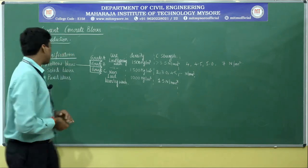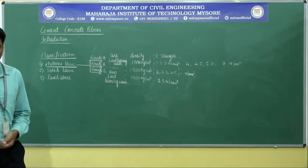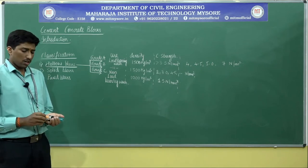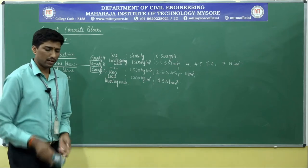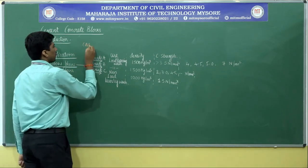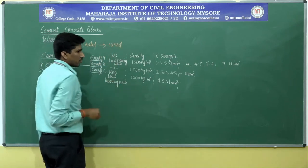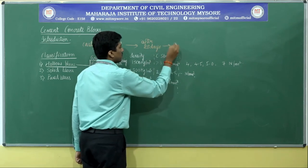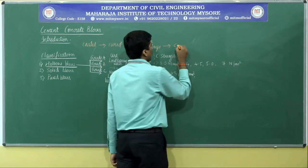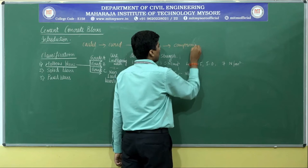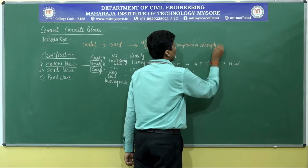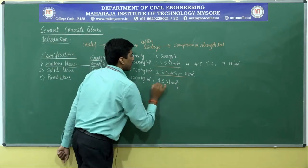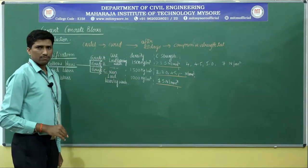That covers the classification of hollow blocks. Regarding how compressive strength is determined — whatever concrete blocks have been cast must be cured for 28 days, after which a compressive strength test is performed, similar to how it was done for bricks. Based on these results, blocks are given specifications for designated uses.